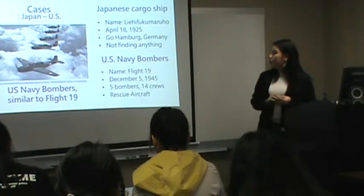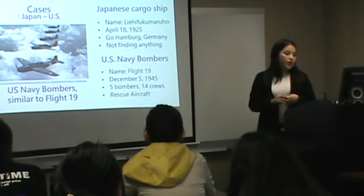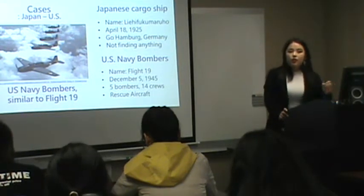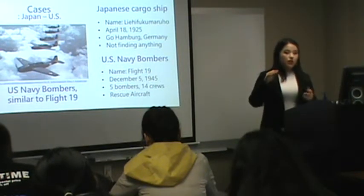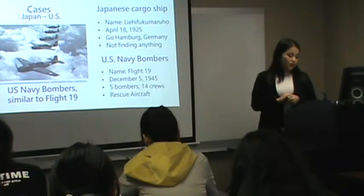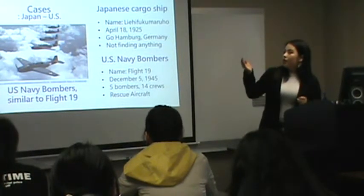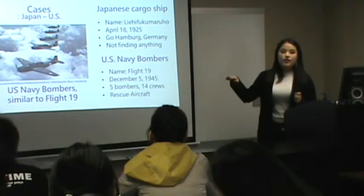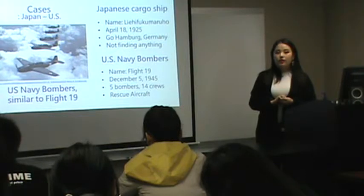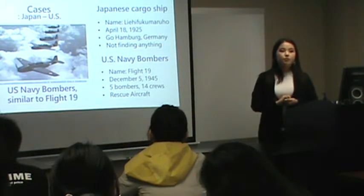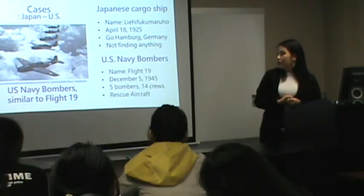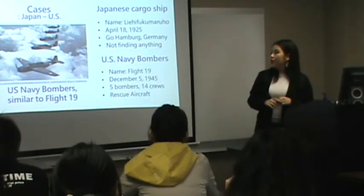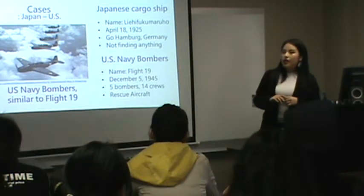The second case is U.S. Navy bombers. On December 5, 1945, five U.S. Navy bombers went on a flight training exercise. The names of these five bombers are Flight 19. This picture is similar to Flight 19. However, five bombers and 13 crew members disappeared in about two hours. In addition, rescue aircraft were also missing. Unfortunately, they couldn't find anything either.